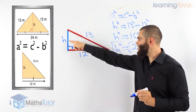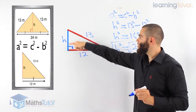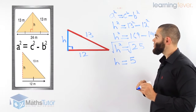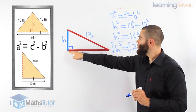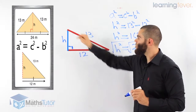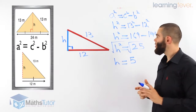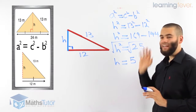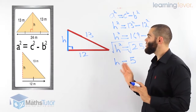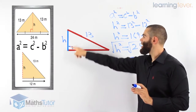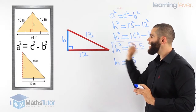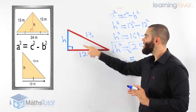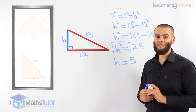Therefore, the vertical height of our roof is 5 meters from the bottom all the way to the apex. We used Pythagoras' theorem: we cut our roof in half, constructed a right-angled triangle, labeled it with our hypotenuse and short side, and found our height.